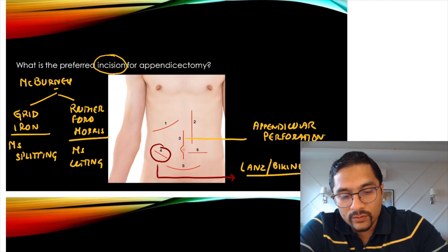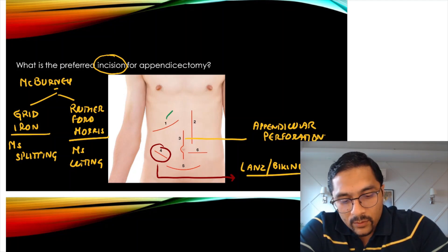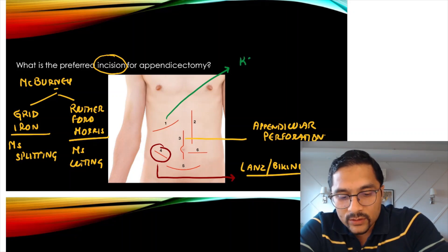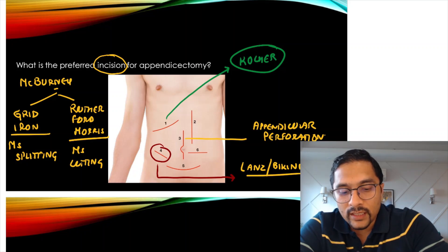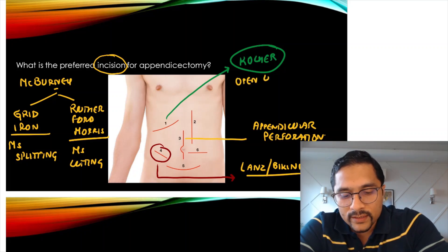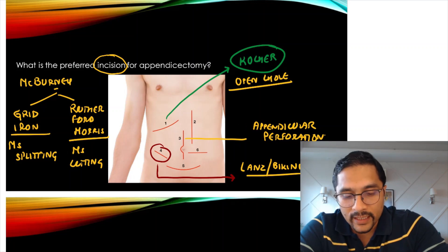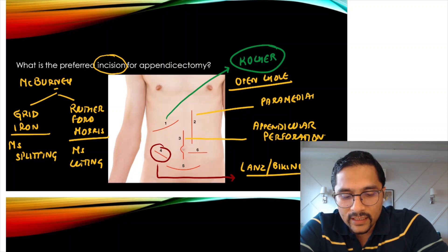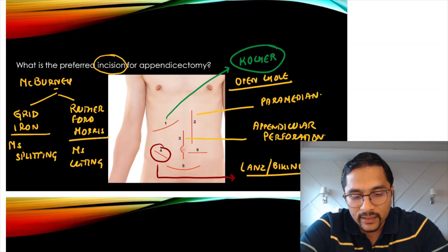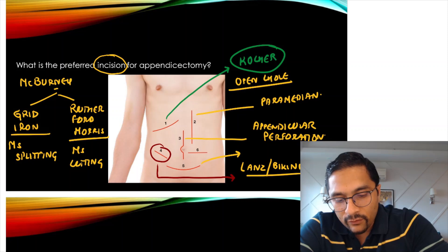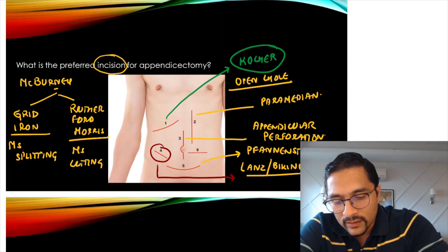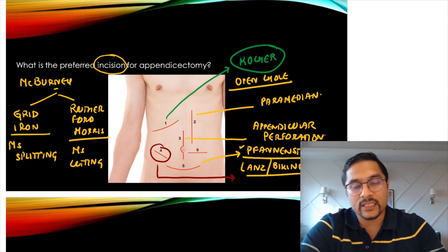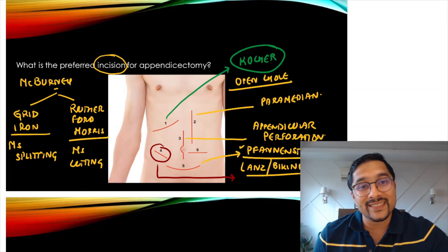Looking at other incisions: number 1 is a right subcostal incision, also known as Kocher's incision, used for open cholecystectomy. Number 2 is a paramedian incision, slightly away from the midline. Number 5 is the Pfannenstiel incision, used for caesarean sections. You should know these incisions for your exam.